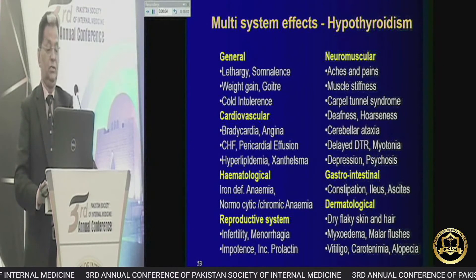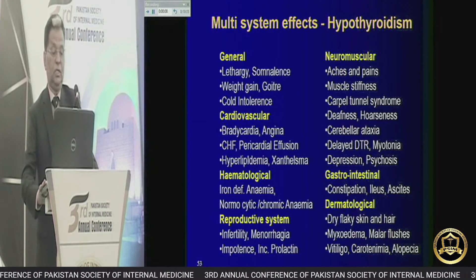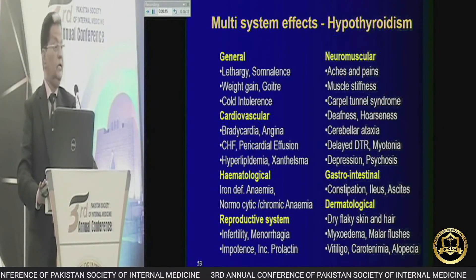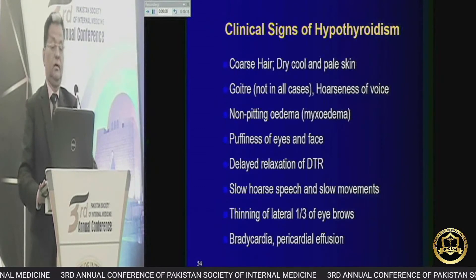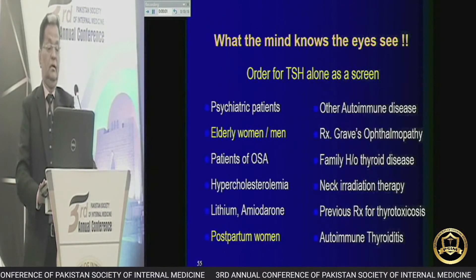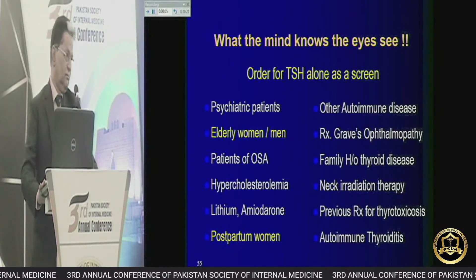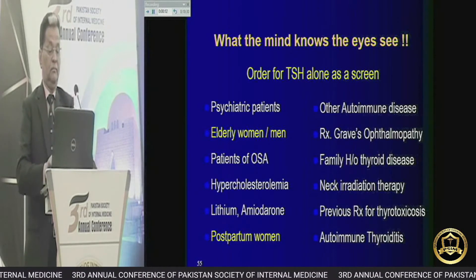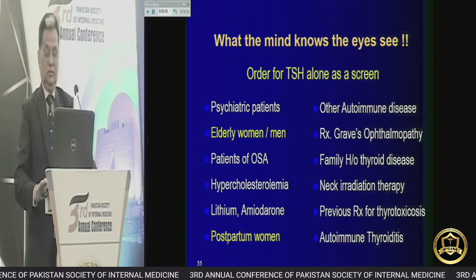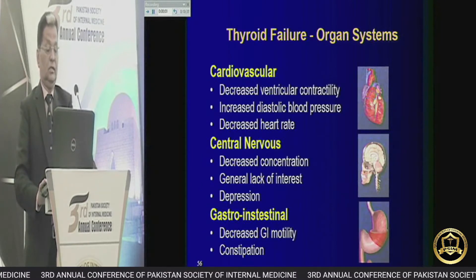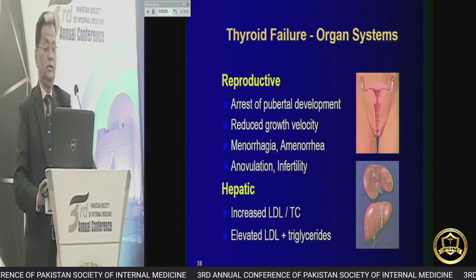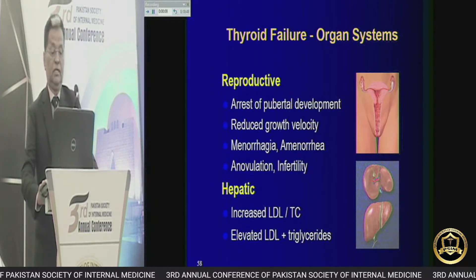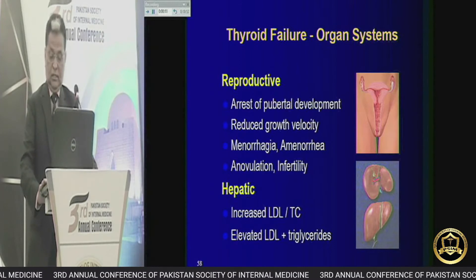Everybody knows the features of hypothyroidism. I will particularly talk about the reproductive system effects: infertility, menorrhagia, and increased prolactin hormone. What the mind knows, the eye sees. Reproductively, features include arrest of pubertal development, reduced growth velocity, menorrhagia, amenorrhea, and infertility. These are the features of thyroid failure.